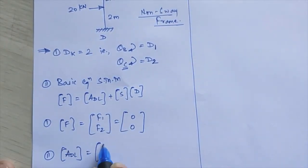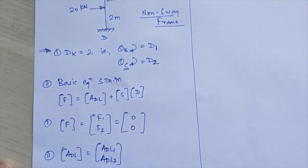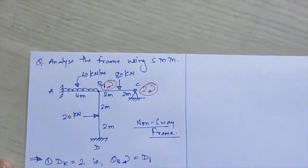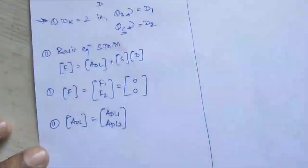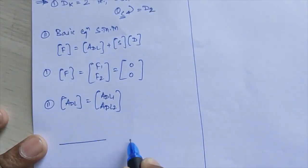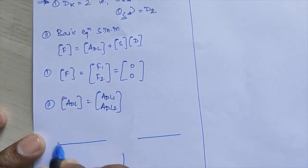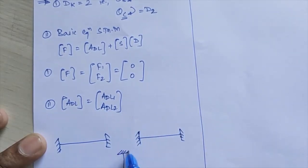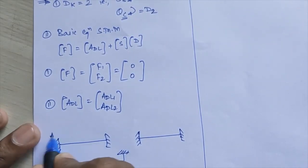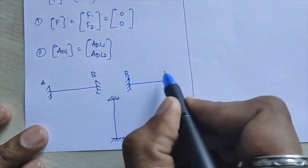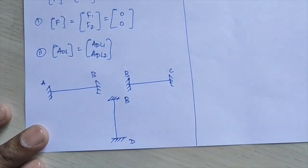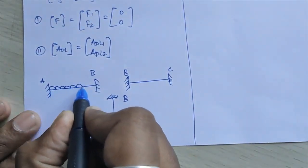The ADL matrix is related to the applied loads. We restrain the structure — meaning we fix all the joints — and calculate the fixed end moments. I will separate the three members: first member AB, second member BC, and third member BD. Whatever loading is given will be substituted onto each member.